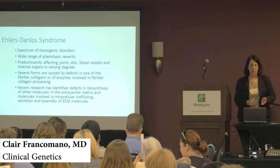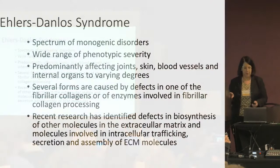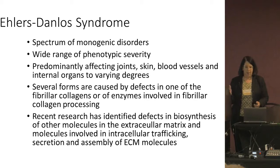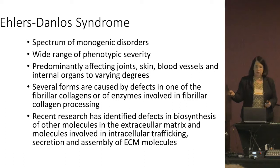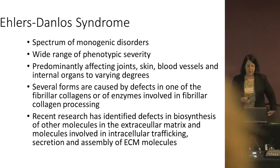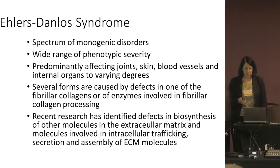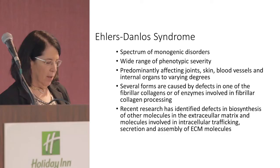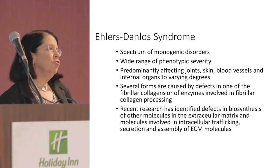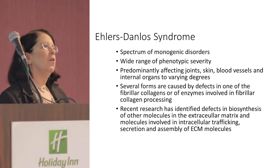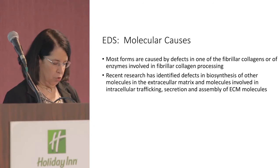Ehlers-Danlos syndrome is a spectrum of monogenic disorders with a wide range of phenotypic severity. The definition depends on the affectation of the joints, skin, blood vessels, and internal organs to varying degrees. Several forms are caused by defects in fibrillar collagens or enzymes involved in processing them, but recent research has identified multiple other mechanisms including biosynthesis of other extracellular matrix molecules and intracellular trafficking and secretion.